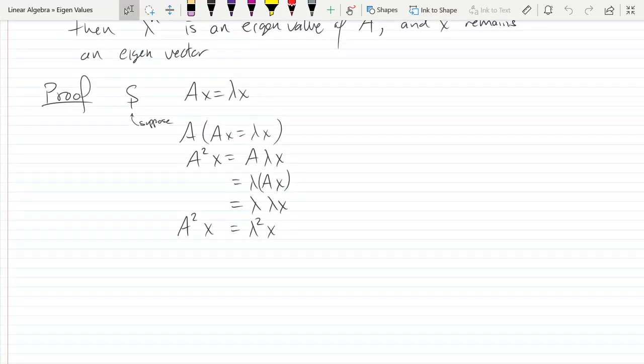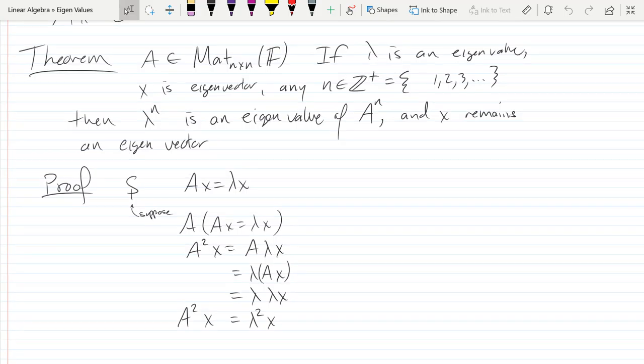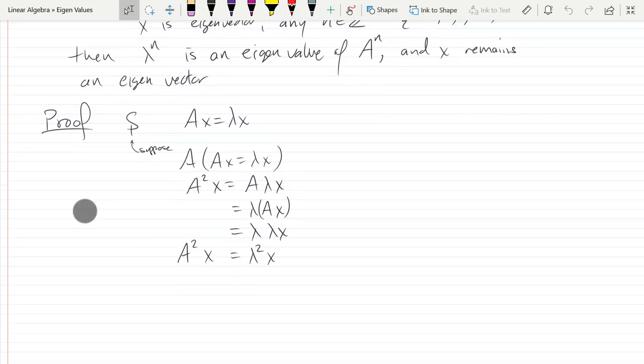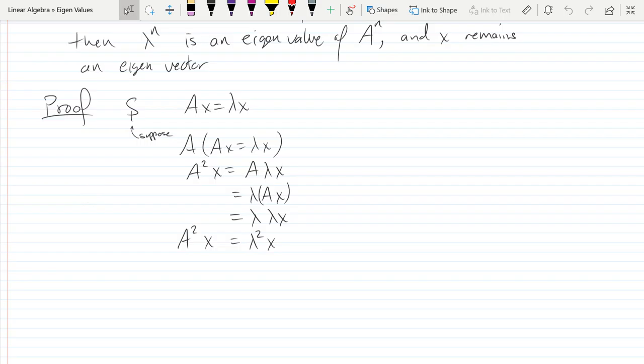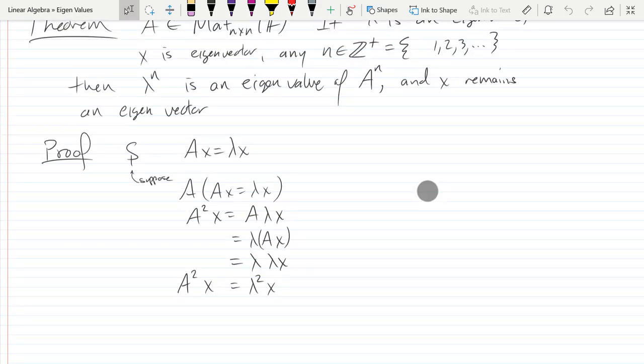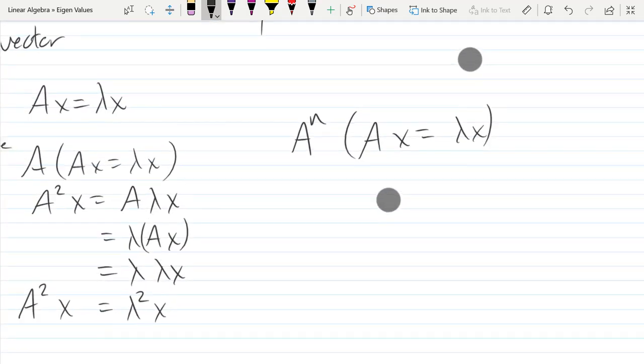So we had shown that basically the power of lambda is the same as multiplying by the power of the A matrix when lambda is an eigenvalue and as long as x is an eigenvector. We saw it happen with the squared. So if you have A to the N, we're going to look at A x equals lambda x, but now we're going to multiply by A to the N like this.